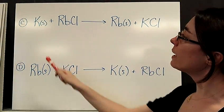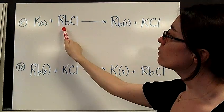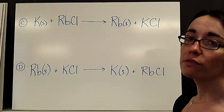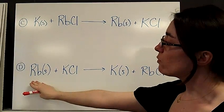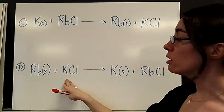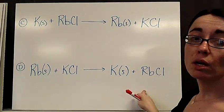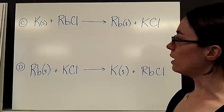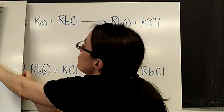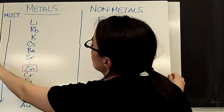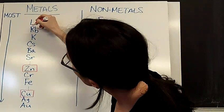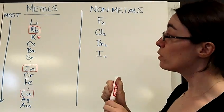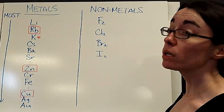Here's another example. We have potassium mixing with rubidium chloride. Through the reaction, the rubidium gets booted out and KCl forms. Another way to look at it: what if we had rubidium solid trying to mix with potassium chloride — would the potassium get booted? We're going to need to look at table J. The rubidium is the one that is more active than the potassium, so the rubidium must be the one that gets more positive.